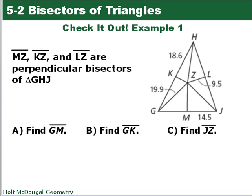Here's a triangle where MZ, KZ, and LZ are all perpendicular bisectors. You need to find GM, GK, and JZ.